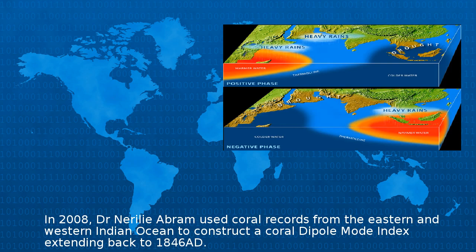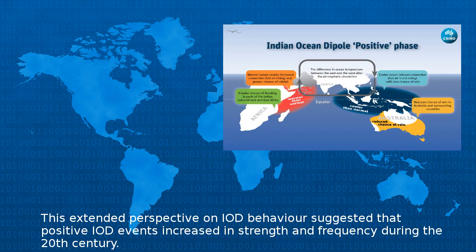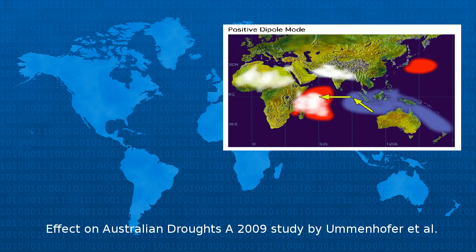In 2008, Dr. Nerilie Abram used coral records from the eastern and western Indian Ocean to construct a Coral Dipole Mode Index extending back to 1846 AD. This extended perspective on IOD behaviour suggested that positive IOD events increased in strength and frequency during the 20th century.